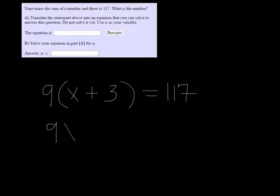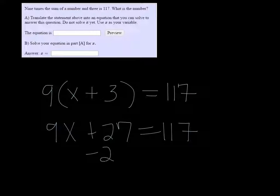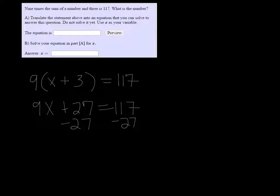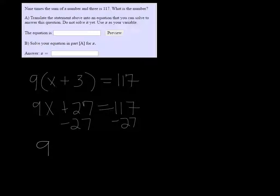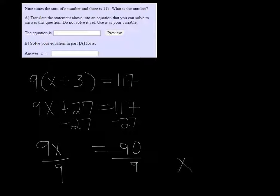So distributing, we get 9x plus 27 equals 117. If I subtract 27 on both sides, we're going to get 9x is equal to 90, and divide both sides by 9, x is equal to 10.